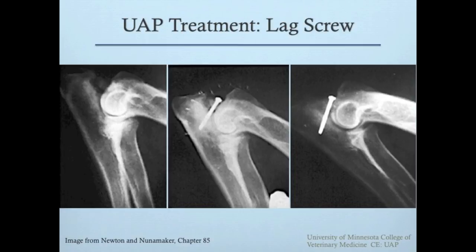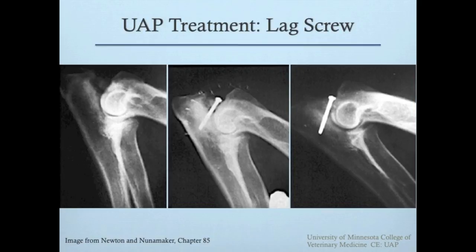Lag screw fixation as a single treatment for a UAP has been met with mixed results. The screw can be placed by an intra- or extra-articular approach, and placement can be improved by arthroscopic or C-arm guidance. However, if the UAP does not heal, the screw may loosen, migrate, or break, requiring a second surgery for removal. This series of radiographs shows lag screw fixation of a UAP by an intra-articular approach as a stand-alone treatment, in which the UAP healed and a good outcome was reported.